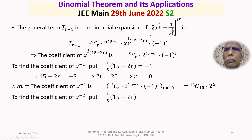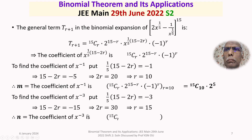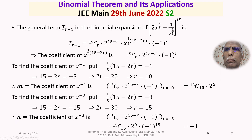To find the coefficient of x^(-3), set (1/5)(15 - 2r) = -3. Solving for r, we get r = 15. Then n = 15C15 · 2^(15-15) · (-1)^15 = 1 · 1 · (-1) = -1. So m = 15C10 · 2^5 and n = -1.